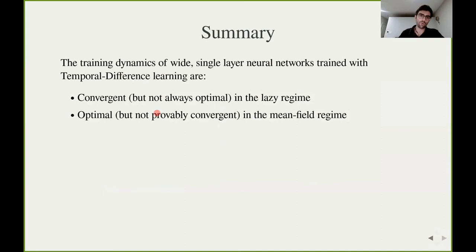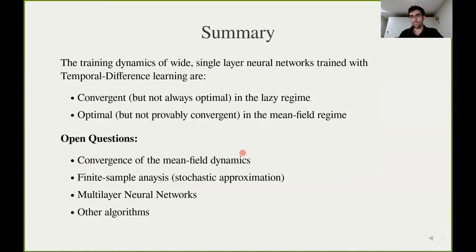To summarize our main results: the training dynamics of single-layer neural networks trained with temporal difference learning are convergent in the lazy training regime but not always optimal in the under-parameterized case, and they are optimal but not provably convergent in the mean field regime. This admits a number of possible next steps concerning the convergence of the mean field dynamics, the finite-sample analysis of our algorithm, and the extension to multi-layer neural networks and other algorithms. With this I will conclude — thank you very much for your attention.